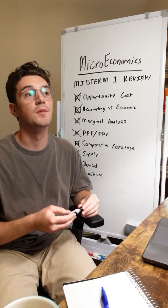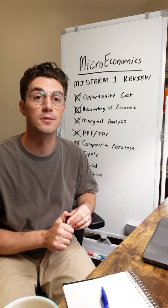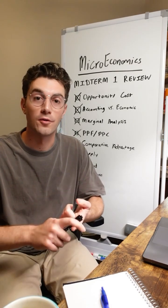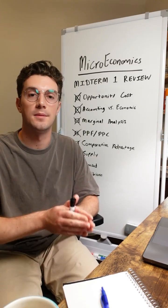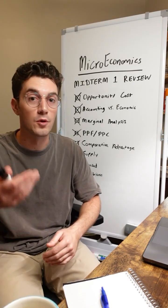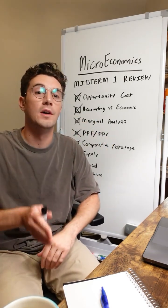All right, last up here, equilibrium. There's three main ways that you need to calculate equilibrium on your test. First, on a graph, just look at the intersection point of the current supply and demand curves and then derive the corresponding price on the y-axis and quantity on the x.